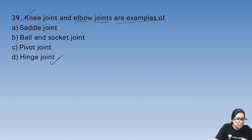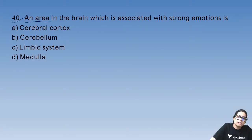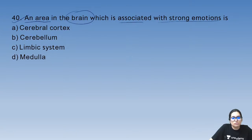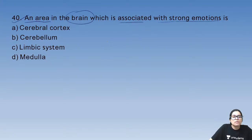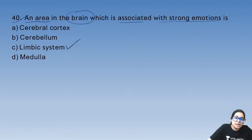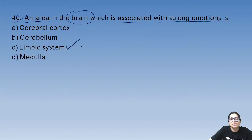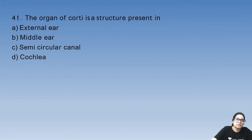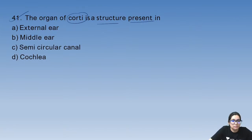Question 40: an area in the brain associated with strong emotions — it is the limbic system, which is associated with strong emotions.